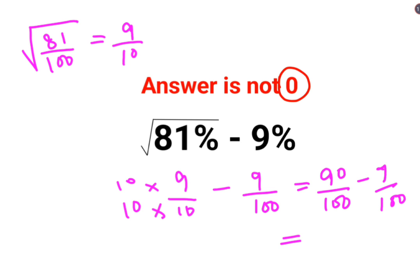Since the denominators are the same, you can directly subtract the numerators: 90 minus 9, that is 81.